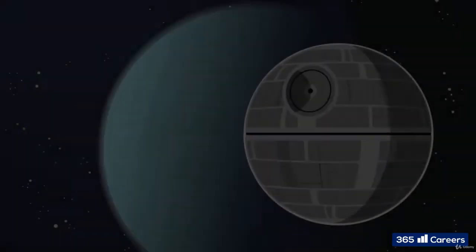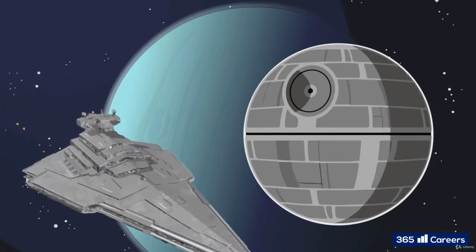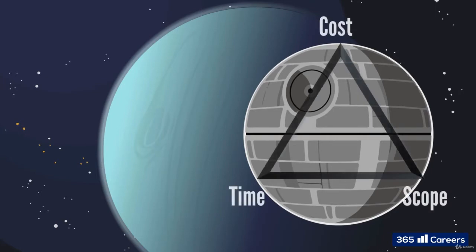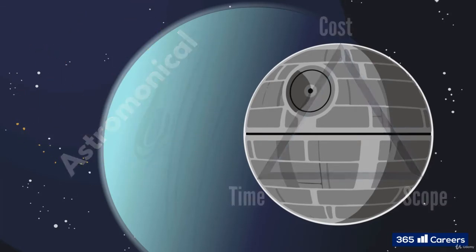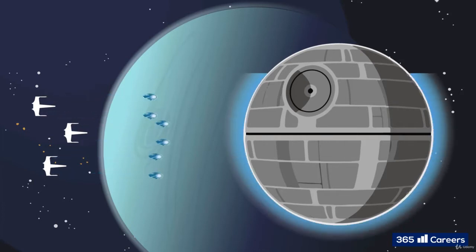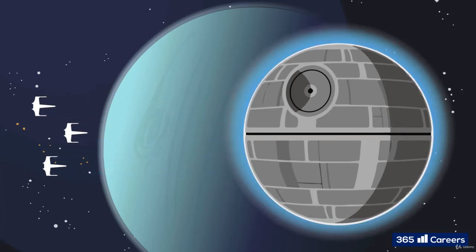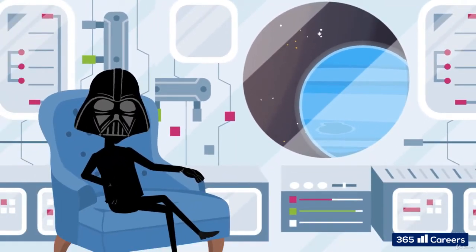When Darth Vader was a project manager for the Death Star, he did a pretty good job. The time, scope and cost for a project such as this must have been astronomical. The vessel was a pinnacle of engineering, and Mr. Vader assumed he had thought of everything. No way could any starship, no matter how large, even make a dent in a super weapon that can blow up planets. So Mr. Vader put his feet up on his favourite armchair and prepared to reap the rewards of galactic domination.